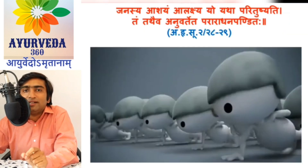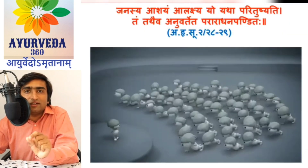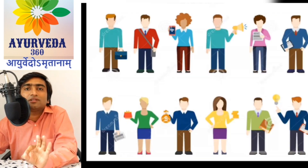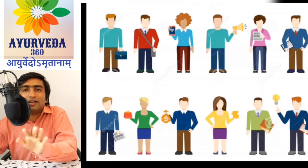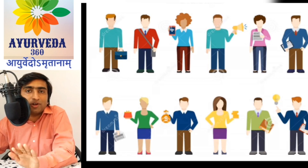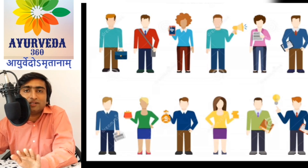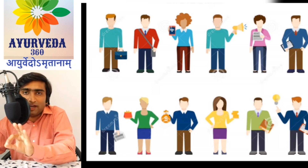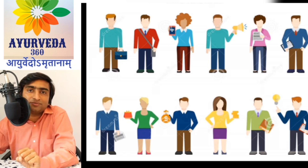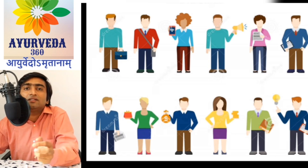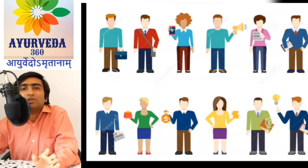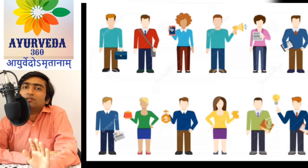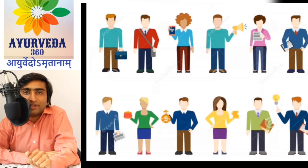In present days, we are using modern technology, which includes principles and information of modern science — the contemporary medical science — only to achieve these three steps of Patha, Avabodha, and Anusthana. That is, to understand our science and to practice it. Is it not possible to read the Samhitas directly and understand Ayurveda without the interference of modern science? Yes, it is possible, but there is one problem — the background of today's education.